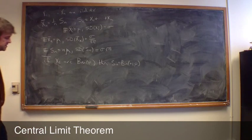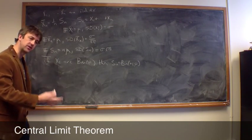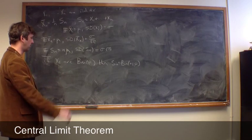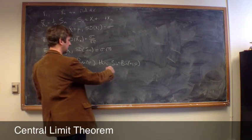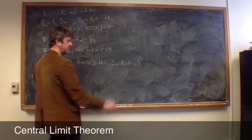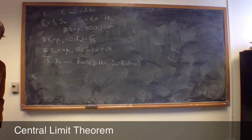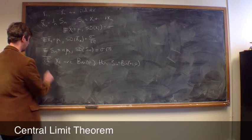And we saw that we had the central limit theorem, or the normal approximation for the binomial, said that we could approximate sn in this particular case by the Gaussian function, the normal distribution. But, okay, in general,